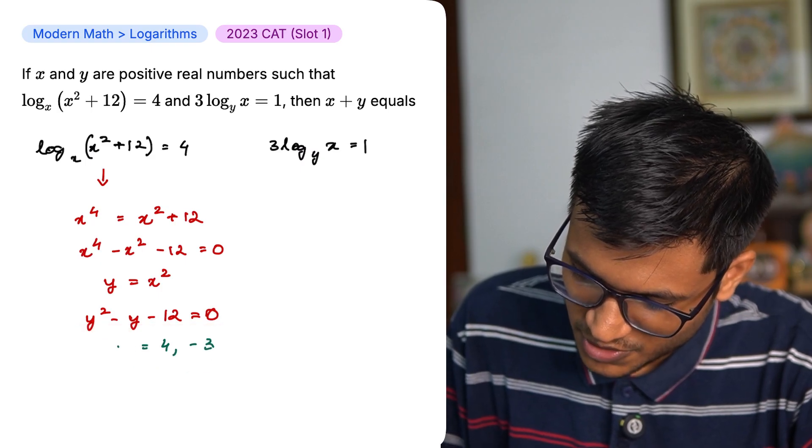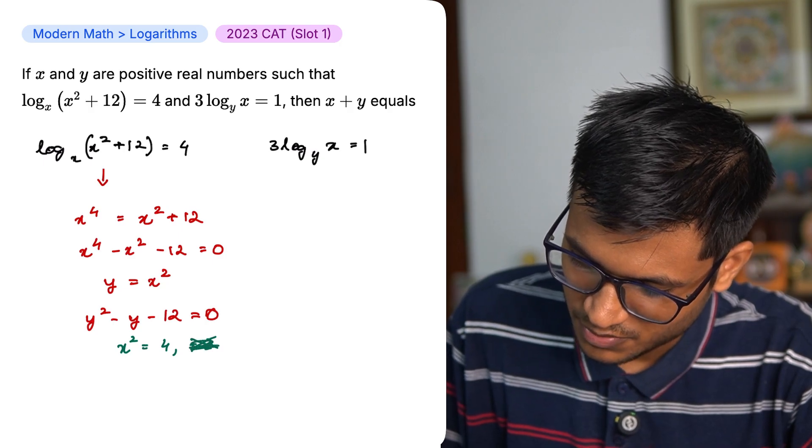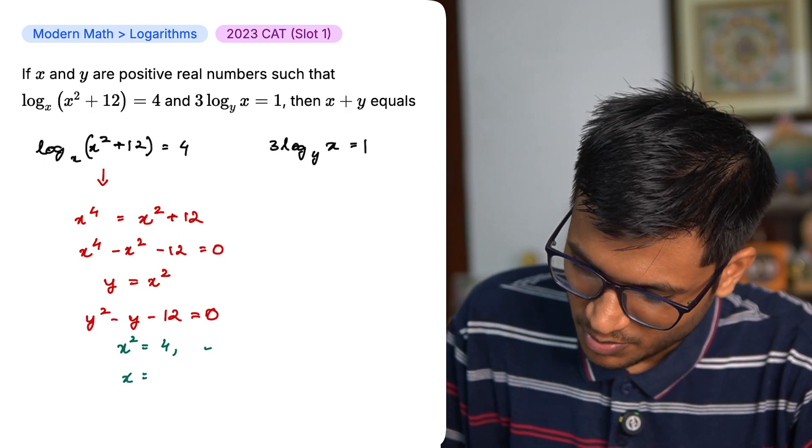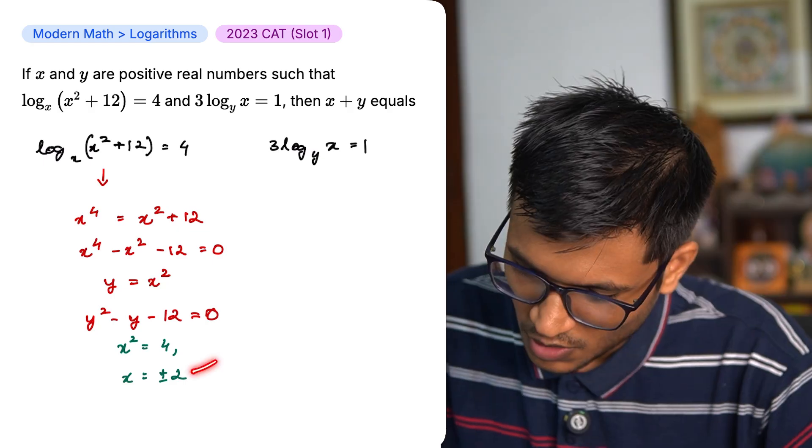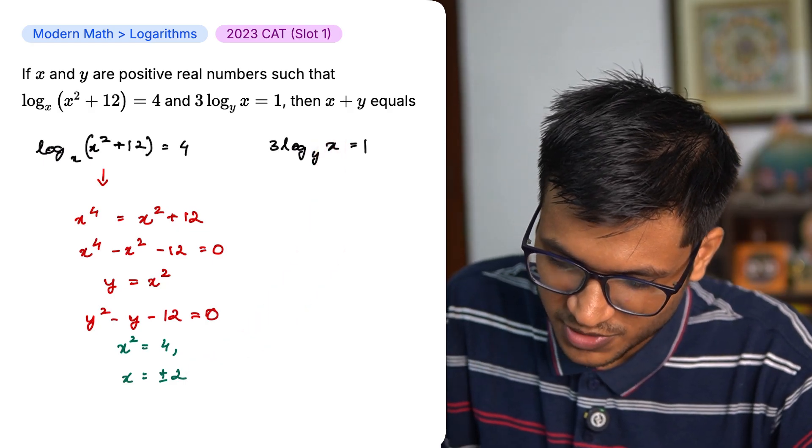So y becomes 4 and minus 3. We know that y is equal to x square. A square cannot be minus 3. So x can be plus or minus 2. Over here, I need a positive number. So x will be equal to plus 2.